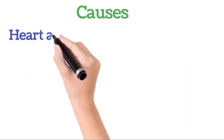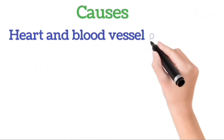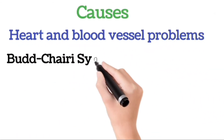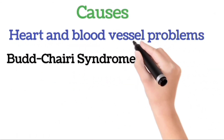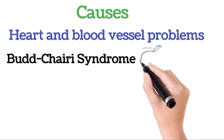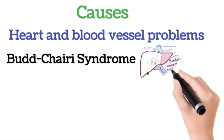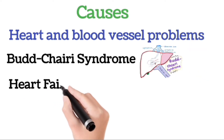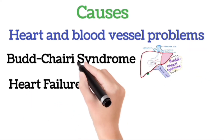Heart and blood vessel problems can also cause an enlarged liver, including blockage of veins that drain the liver, known as Budd-Chiari syndrome, heart failure, and inflammation of the tissue surrounding the heart.